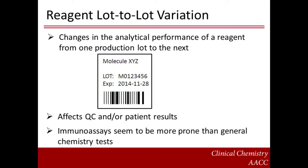Reagent lot-to-lot variation may be defined as a change in the analytical performance of a reagent from one production lot to the next. Here we use the term lot to mean a batch of reagent produced by the manufacturer under uniform conditions and passing as a unit through the same series of processes. While some lot-to-lot changes only affect QC measurements, others may simultaneously affect patient results. The limited commutability of QC materials with patient samples, however, means that the effects of the new reagent lot on the patient results cannot be predicted from the behavior of the QC measurements.